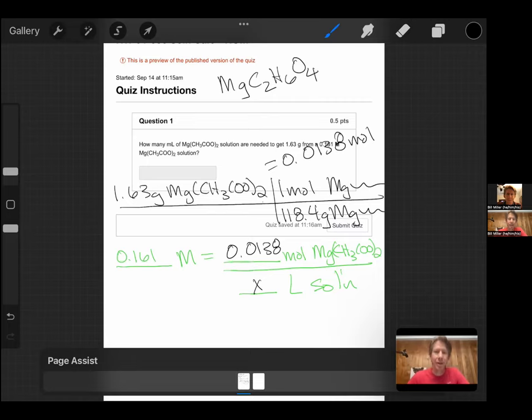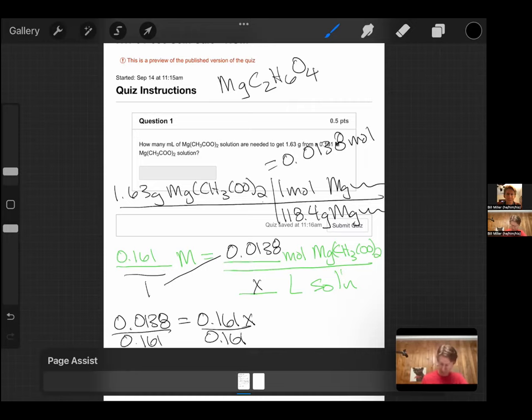Since we're looking for liters or milliliters, we're going to solve for the liters part. We're going to do cross multiplication. I get 0.0138 equals 0.161x. To get x by itself, I divide both sides by 0.161, and I get 0.0857 in liters.